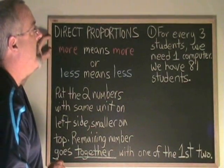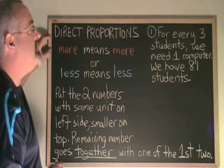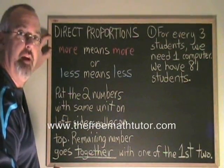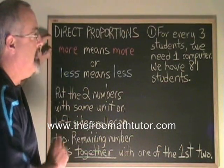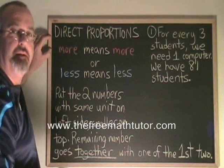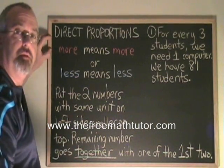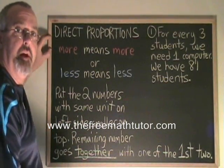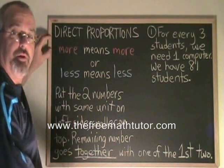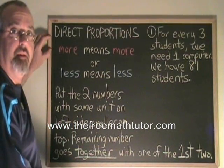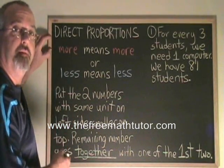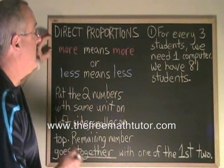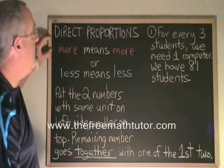For every three students, we need one computer. We have 81 students. This type of problem can be easy to figure out just using logic, but you have to show your work in math. So building the proportion is the way of making the equation and showing our calculations.